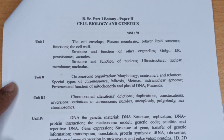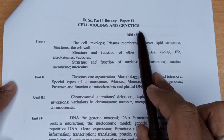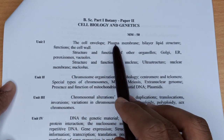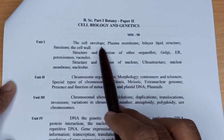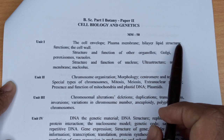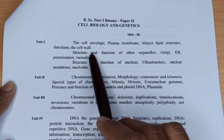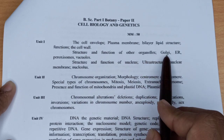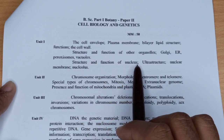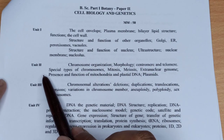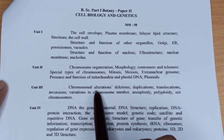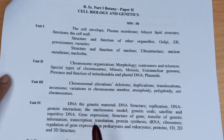Paper 2 है Cell Biology and Genetics पर। Unit 1 में cell biology: cell envelope जैसे plasma membrane, bilayer, lipid structure, functions, cell wall। Structure and function of organelles जैसे Golgi body, endoplasmic reticulum, peroxisome, vacuole और structure and functions of the nucleus। Unit 2 में chromosome organization और Unit 3 में chromosomal alteration है।